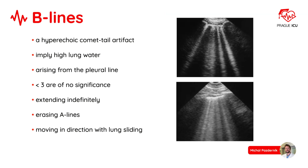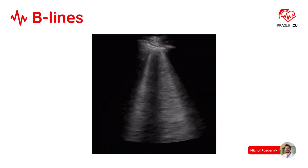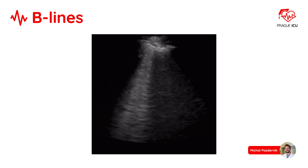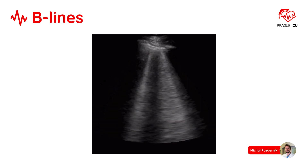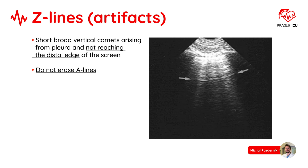Another pathological finding is B-lines. B-lines are hyperechoic comet-tail artefacts that imply high lung water. They arise from the pleural line; fewer than 3 are of no significance. They extend indefinitely, erase A-lines, and move in the direction of lung sliding. Three or more B-lines indicate increased density or fluid. We should also be aware of Z-lines, which are short, broad vertical comets arising from the pleura and not reaching the distal edge of the screen — they do not erase A-lines.